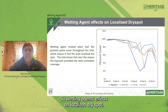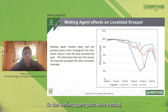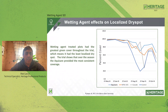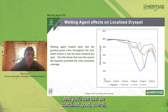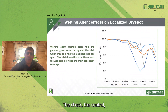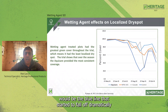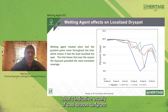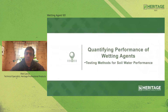Looking at wetting agent effects on localized dry spot: wetting agent plots were treated and percent coverage — greenness — was measured. The treated plots maintained good, consistent coverage throughout the entire season versus the check, which is the blue line that started to fall off dramatically during the hottest time of the year, with some recovery later in the season typical of cool season turf grass.